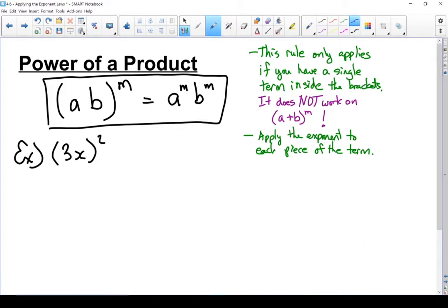Here I have (3x) squared. I could write it as 3x times 3x, but if we have a larger exponent that gets quite long, so I prefer to use the power of a product rule. I'm going to take 3 and apply the exponent to that, and take the x and apply the exponent to that. 3 squared equals 9, and x squared stays as it is. A common mistake is forgetting to apply that exponent to the coefficient out front.